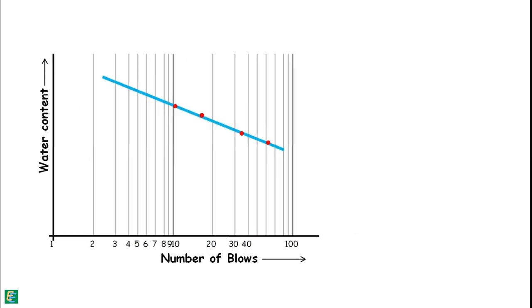Slope of this curve can be calculated by taking any two water contents W1 and W2 and their corresponding number of blows N1 and N2. Now using this right angle triangle, we can determine the tan theta.